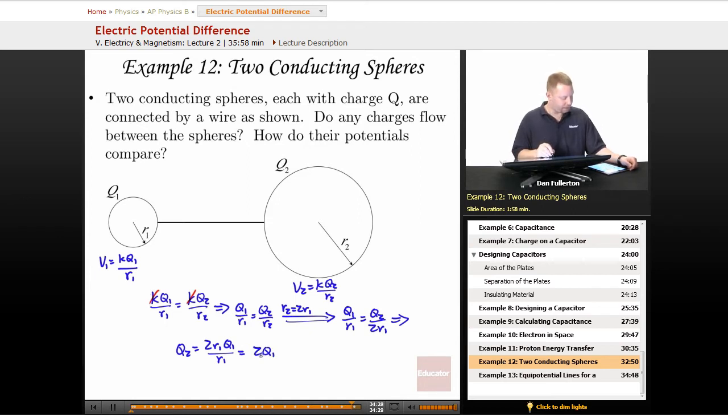Q2 is equal to twice Q1, then we must have charge flowing from 1 to 2. So our charge must be flowing that way. We'll have charge flowing from Q1 to Q2. How do their potentials compare? They've got to be equal.